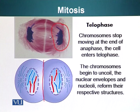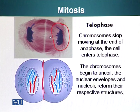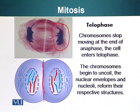The actin and myosin fibers present here start to constrict, resulting in separation of the two cells. In telophase, the chromosomes also begin to uncoil, the nuclear envelopes start to reform, and the nucleoli also start to form. This completes telophase.